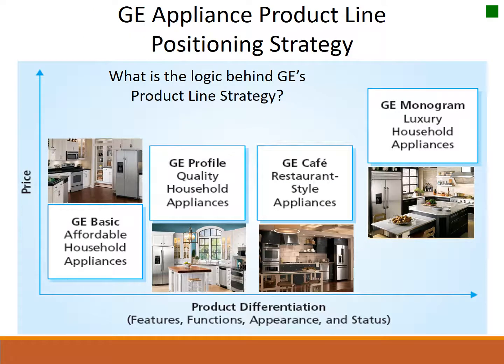Here's another example with General Electric's appliances. We have a price variable ranging from lower to upper price. There's the lower-price GE Basic, mid-level GE Profile and Café, and then the high-price GE Monogram. Three different price stages, and we would expect better quality products at higher prices. Ideally, each level reaches different market segments — we can have completely different product names, strategies, and positioning, but very similar products, all within the same company.